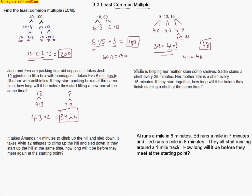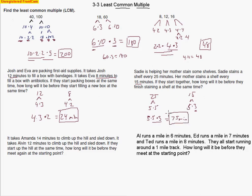Sadie stains shelves every 25 minutes and her mother finishes a shelf every 15 minutes. How long before they finish staining a shelf at the same time? We break down: 5 times 5 makes 25, and 5 times 3 makes 15. Taking the bigger number, 5 times 5 is 25, and 15 just needs a 3. So 25 times 3 is 75. After 75 minutes they'll both be starting a new shelf — Sadie will have done 3 shelves and her mother will have done 5.